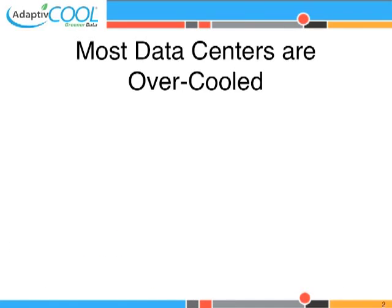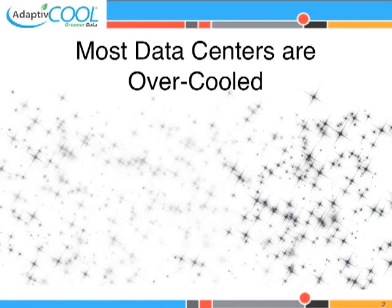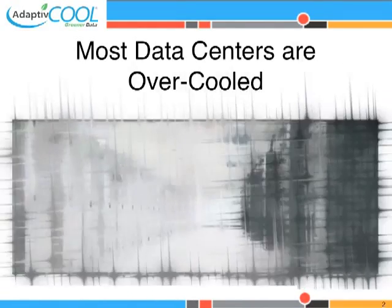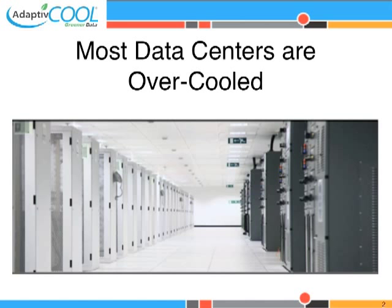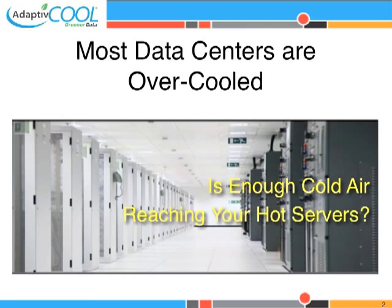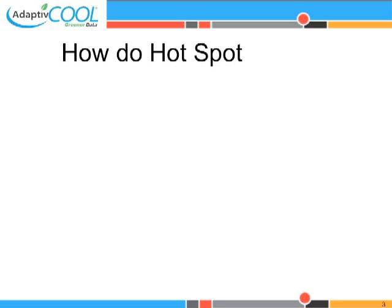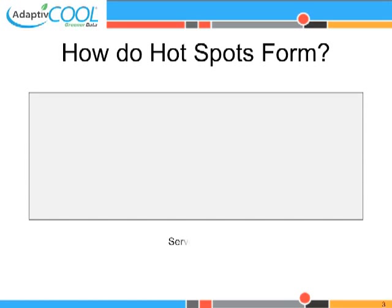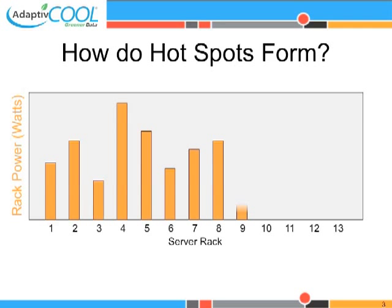Studies show that an average data center has two to three times the required cooling. Even then, most of them have hotspots. Hotspots form when there is excess heat in a local area without sufficient cooling.